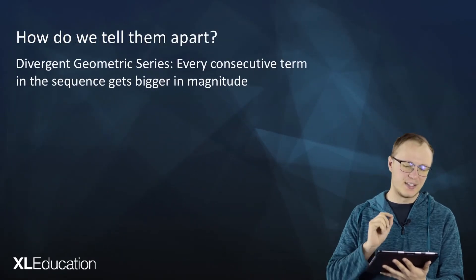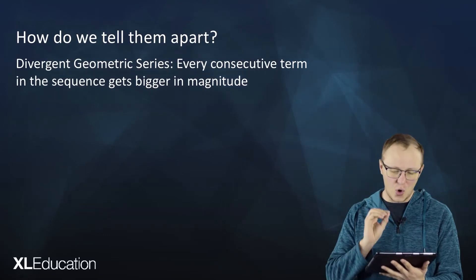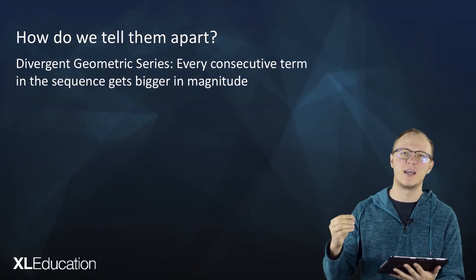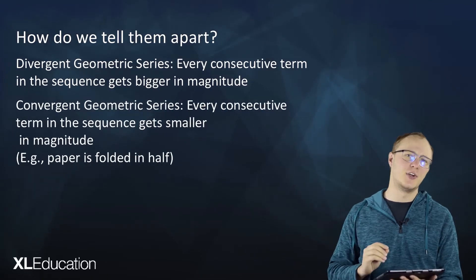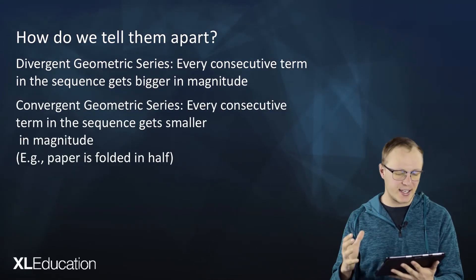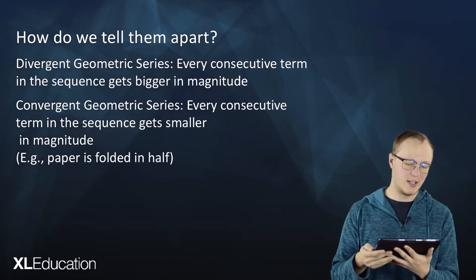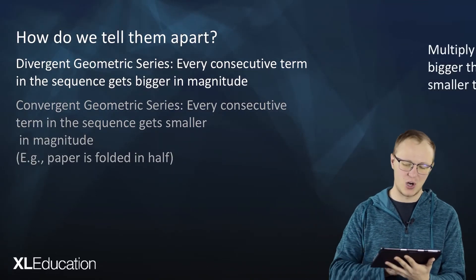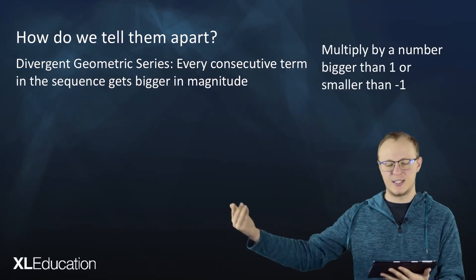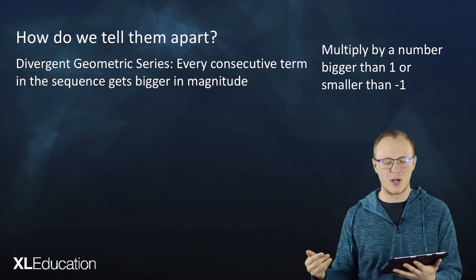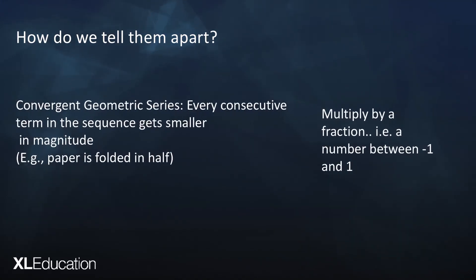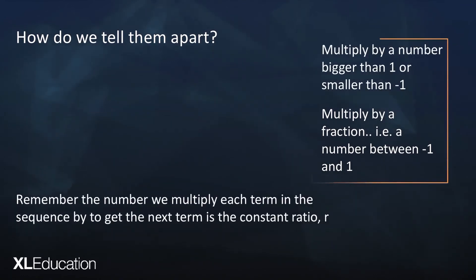How do we tell them apart? Divergent geometric series always have consecutive terms that get bigger and bigger in magnitude. But convergent geometric series have consecutive terms that get smaller and smaller in magnitude, such as paper being folded in half. To get something that gets bigger every time, we've got to multiply by a number bigger than 1 or smaller than negative 1. To get something to get smaller each consecutive term, we've got to multiply by a fraction, a number between negative 1 and 1. The number we multiply each term by is called the constant ratio r.